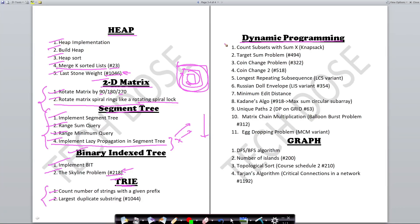Dynamic programming is of course very important, and I've listed down 11 of the most important problems covering different domains. Count subset with sum equals to x is from knapsack, target sum is from knapsack, coin change problem is from unbounded knapsack, coin change 2 as well. The fifth problem is an LCS variant, sixth is an LIS variant, then minimum edit distance, Kadane's algorithm variant #918 from LeetCode, DP on grid variant #63 from LeetCode, MCM variant matrix chain multiplication, balloon burst problem from #312, and egg dropping problem which is also an MCM variant. If you can revise this, you'll be confident in dynamic programming as well.